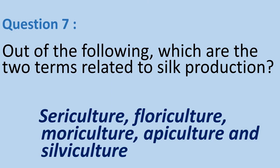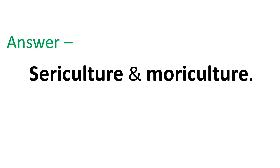Question 7: Out of the following, which are the two terms related to silk production? Sericulture, floriculture, moriculture, apiculture, and silviculture. Different cultures are mentioned here; however, our aim is to find the two cultures related to silk production. The correct two cultures are sericulture and moriculture.